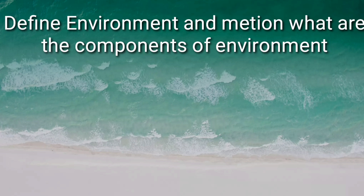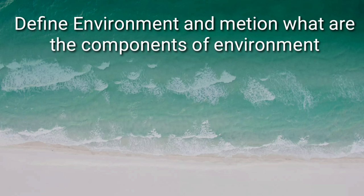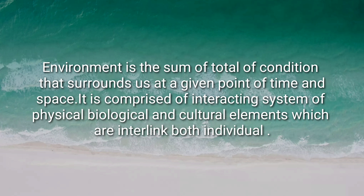Next question: define environment and mention what are the components of environment. Environment is the sum total of conditions that surround us at a given point of time and space. It is comprised of an interacting system of physical, biological, and cultural elements which are interlinked both individually and collectively. The components are biotic environment, abiotic environment, and built environment.